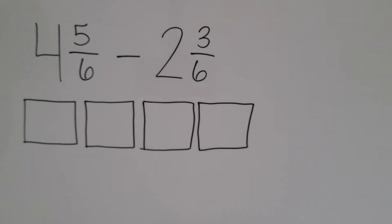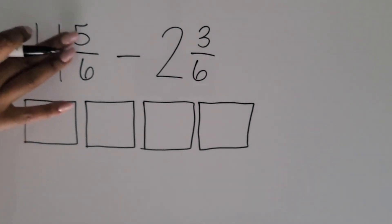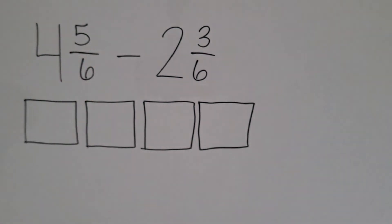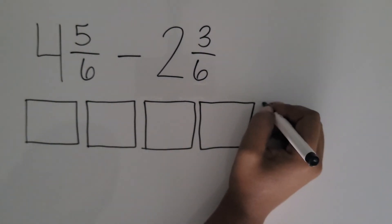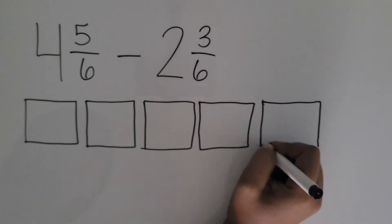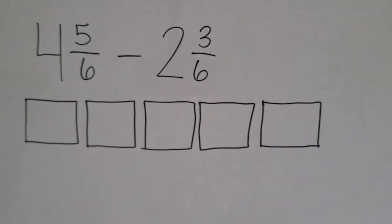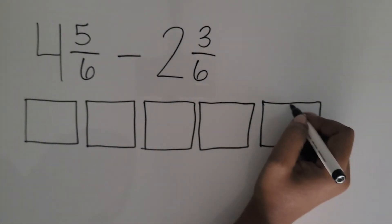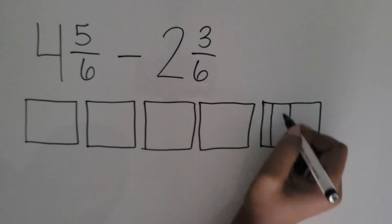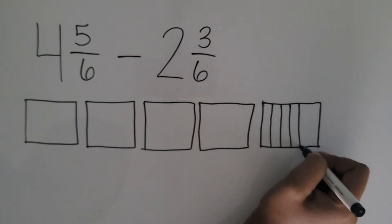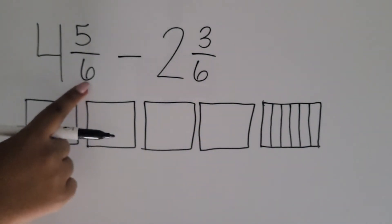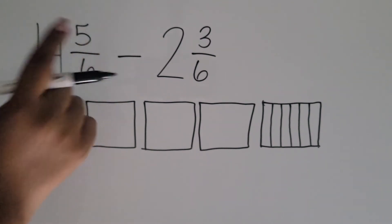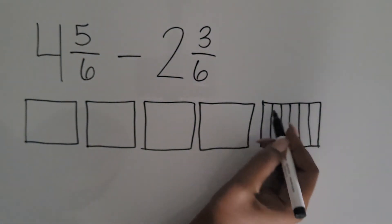Something students might do is represent their four wholes using rectangles. If any students stop there, ask them how to represent the five-sixths — they realize they need to draw a fifth rectangle. They then partition that rectangle into six equal parts and shade in five of the six.